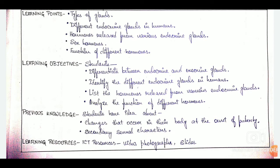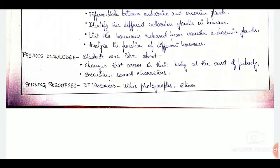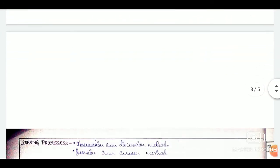Once that is done, we move on to write the learning points. Then comes the learning objectives. Again, the learning objective, we need to choose the keywords very carefully from Bloom's taxonomy. Like, we have used differentiate, identify, list and analyze here. Next comes the previous knowledge and then learning resources. That's all. Any lesson plan along with the concept map is one thing. Next is the learning process.